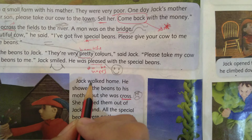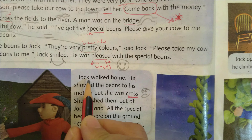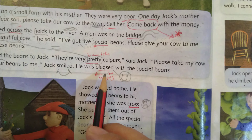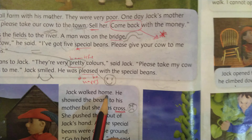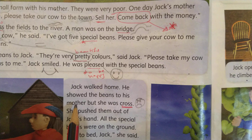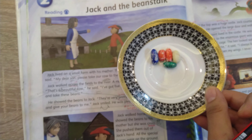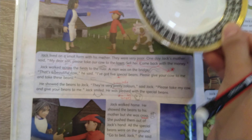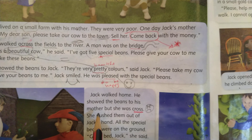Go to the first sentence of this paragraph: 'Jack walked home.' بعد ما وامبسط وأخذ خمس special beans، walked home يعني رجع للبيت، ماشي للبيت. He showed the beans to his mother — showed يعني فرجاهم لماما. We learned the word 'showed.'